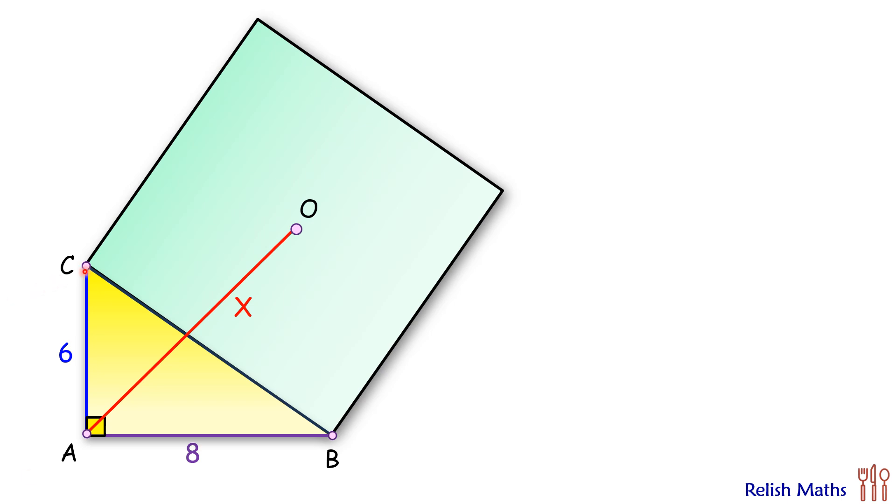So first we can find the length of this hypotenuse using Pythagorean theorem. This length is 10 cm. Next, we can draw the diagonals of the square.